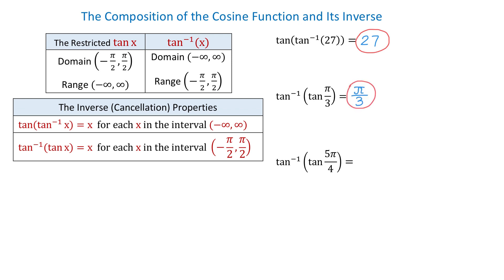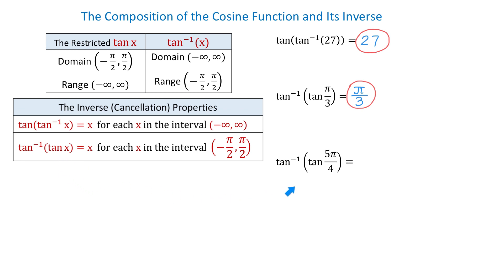In the last example, we have inverse tangent of tangent of 5 pi over 4. The value 5 pi over 4 is not on the interval between negative pi over 2 and positive pi over 2, because 5 pi over 4 is greater than pi over 2. Therefore, we cannot use this property directly, and the result will not simply be 5 pi over 4.